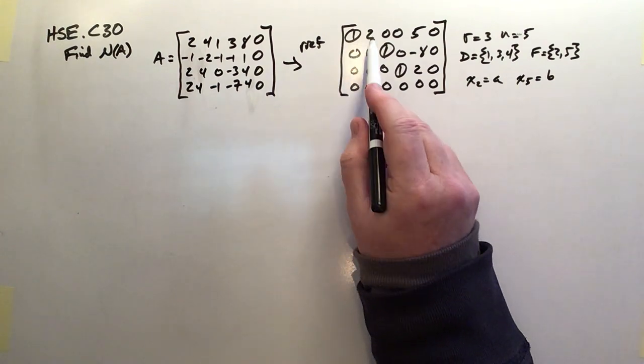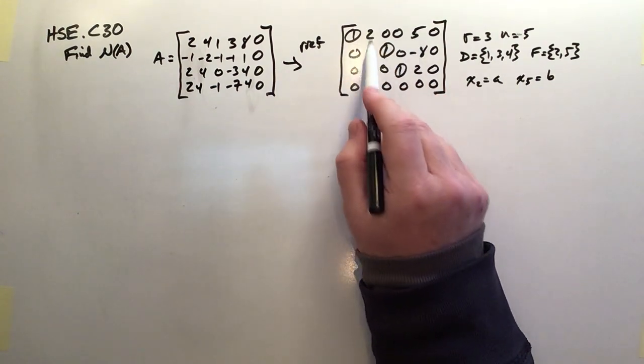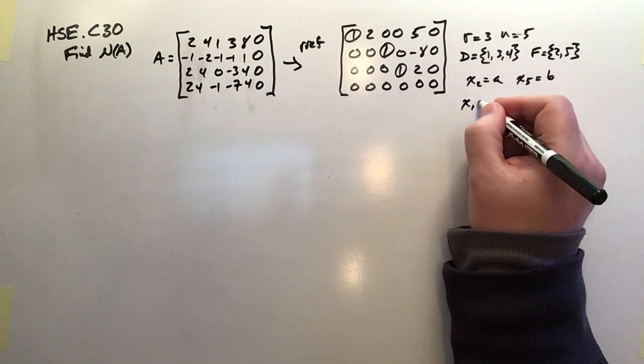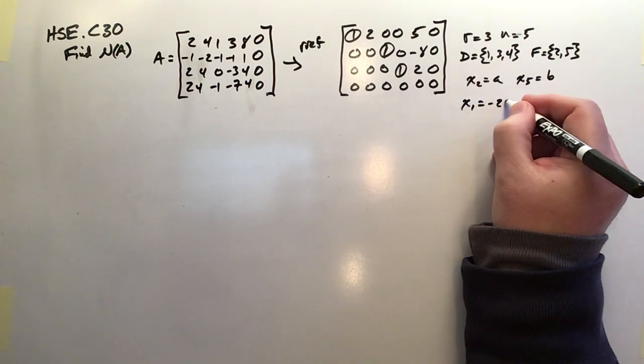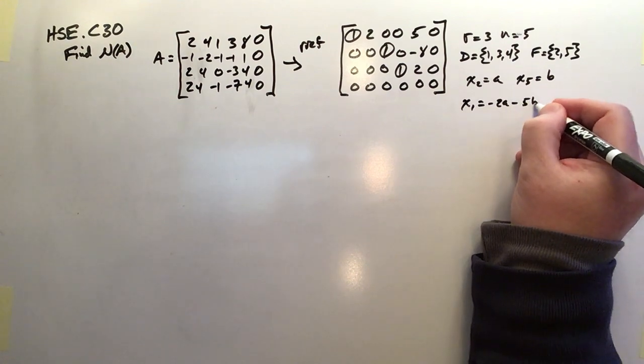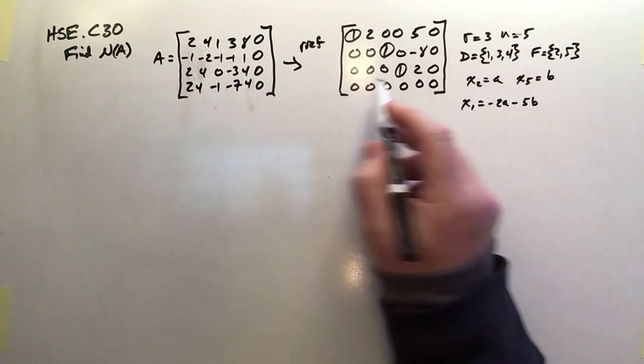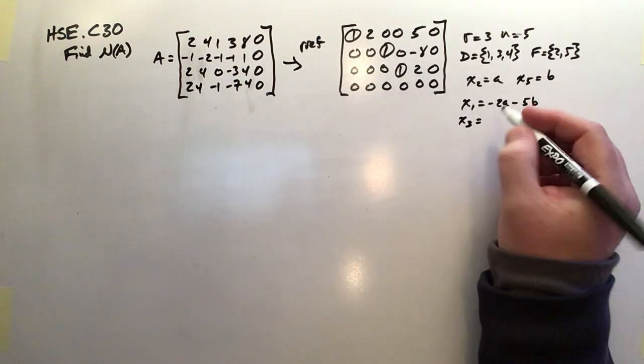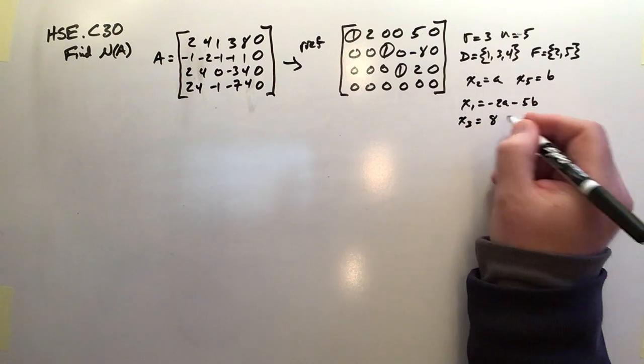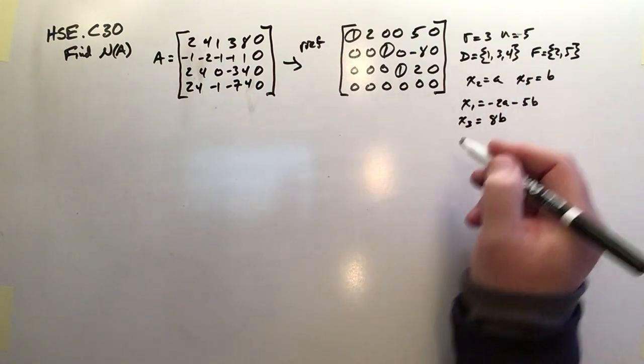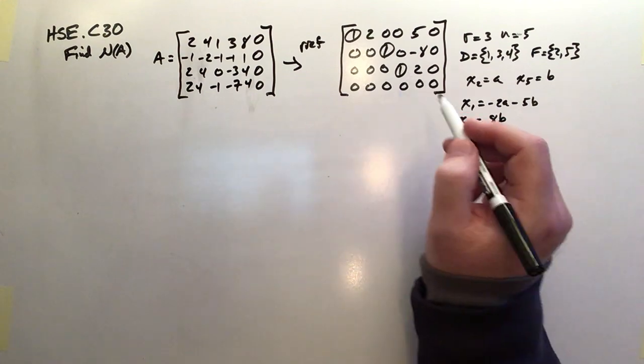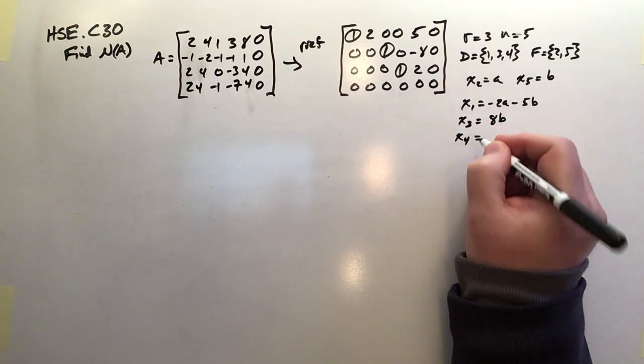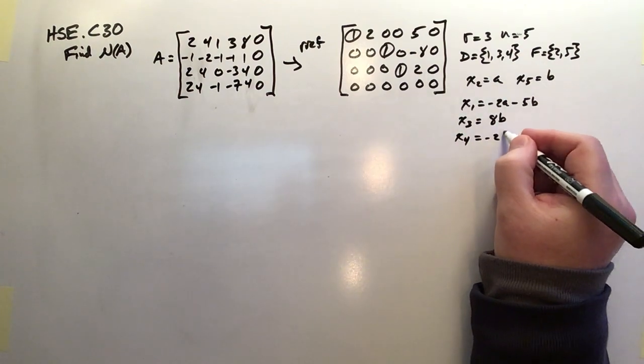So first 1. So it's going to be negative 2A minus 5B. So that's going to be x1 is negative 2A minus 5B. x3 is the next dependent variable. And x3 is going to be negative, or now it's going to be 8B by the time it's on the other side. And then finally, x4 is the third dependent variable. And x4 is going to be negative 2B.